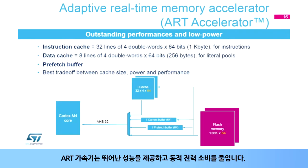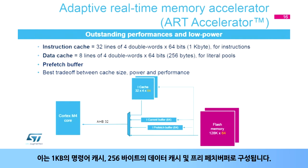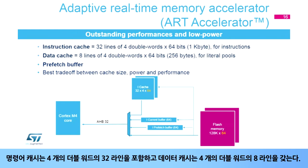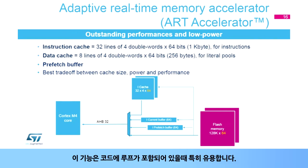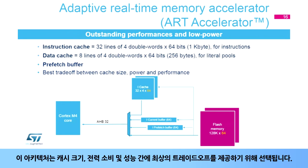The ART accelerator brings outstanding performance and reduces dynamic power consumption. It consists of a 1 kilobyte instruction cache, 256 bytes of data cache, and a pre-fetch buffer. The instruction cache contains 32 lines of 4 double words, and the data cache has 8 lines of 4 double words. Once all instruction cache memory lines have been filled, the LRU (least recently used) policy is used to determine the line to replace. This feature is particularly useful when code contains loops. This architecture provides the best tradeoff between cache size, power consumption, and performance.